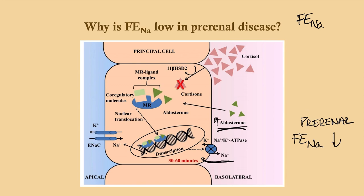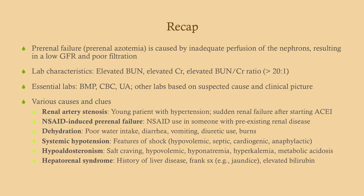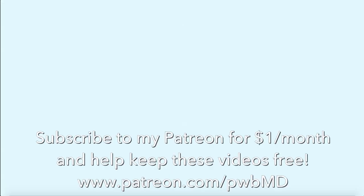In other types of renal failure, FENa will not be low — it will be higher because the tubules are not working properly. To recap: pre-renal azotemia is caused by inadequate perfusion of nephrons, resulting in low GFR and poor filtration. Key labs: elevated BUN, elevated creatinine, elevated BUN-to-creatinine ratio greater than 20:1 — that is the dead giveaway. Causes and clues: renal artery stenosis, NSAID use, dehydration, hypoaldosteronism, and hepatorenal syndrome.